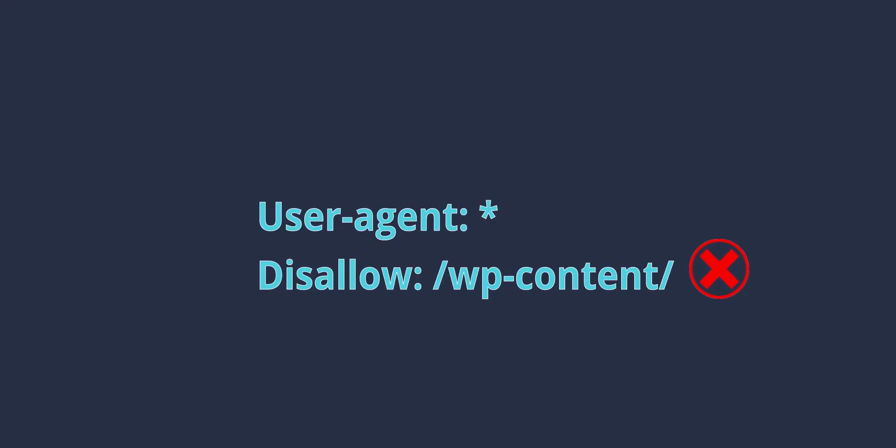Reason number four is your robots.txt file. If you add instructions to robots.txt that you don't fully understand, it can cause this issue. For example, in WordPress, if you disallow the wp-content folder, the crawler won't be able to download your CSS files, which live in a subfolder of wp-content. So just quickly check your robots.txt file and make sure there are no disallow instructions that block the crawler from accessing your asset folders.